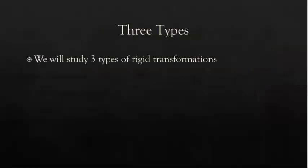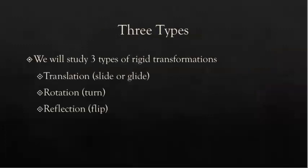There are three types of rigid transformations. First, we have a translation, which is a slide or a glide; a rotation, which is a turn; or a reflection, which is a flip.